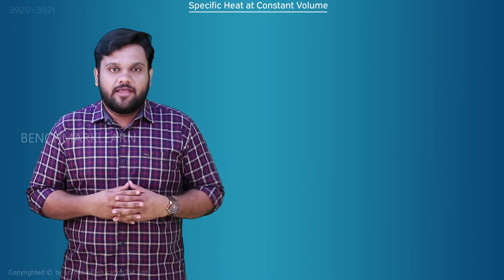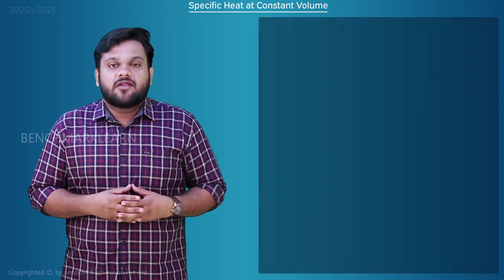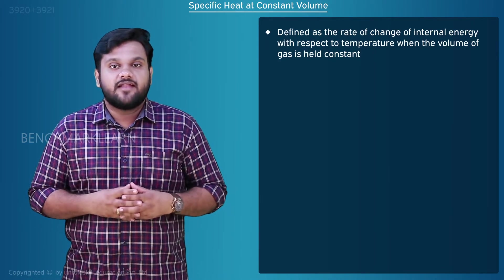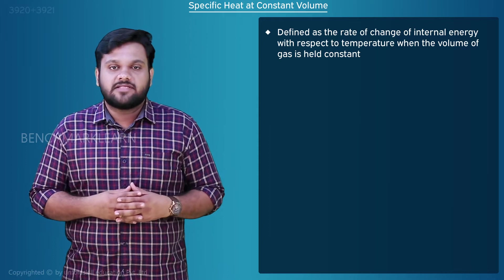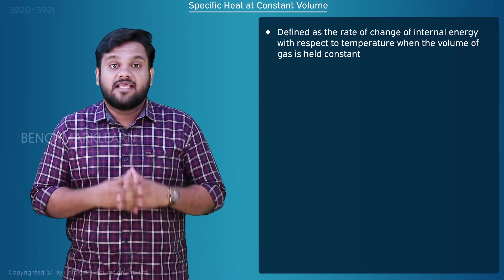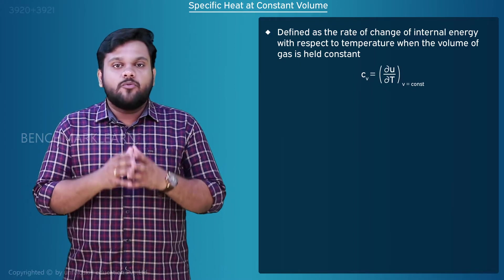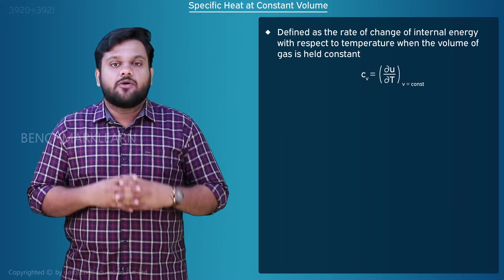Specific heat at constant volume is defined as the rate of change of internal energy with respect to temperature when the volume of gas is held constant. Cv is equal to dU by dT at V equal to constant.